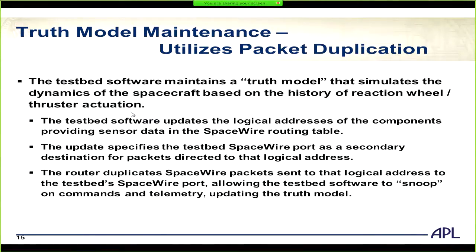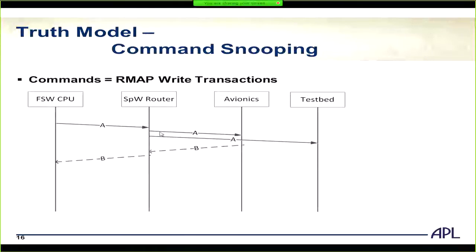For command snooping — for example, tracking reaction wheel commands — we set up a logical address for thruster commands in the SpaceWire router and enable duplication. As the guidance and control software sends a thruster activation command through the router, that command is duplicated: it goes to both the avionics and the test bed. The response comes back from the avionics normally, but the test bed now understands what happened because it received the duplicated packet.